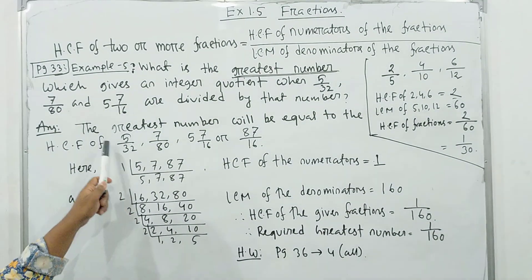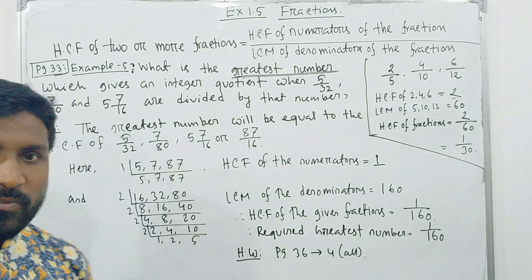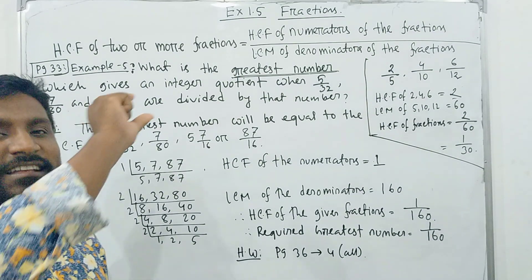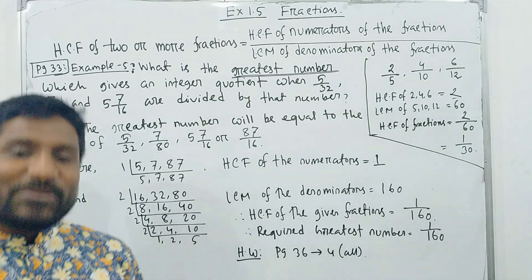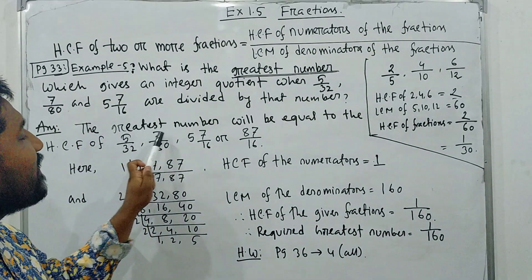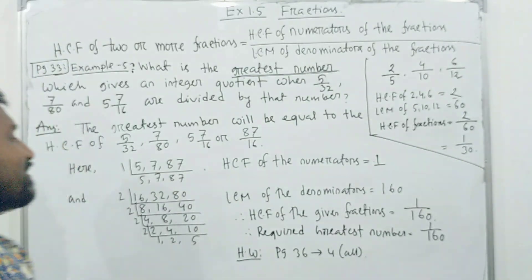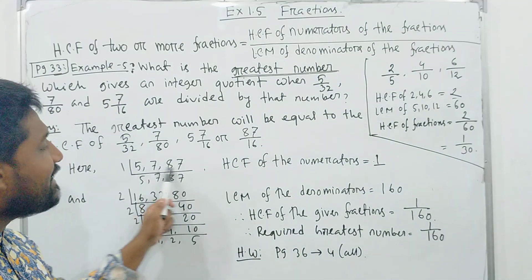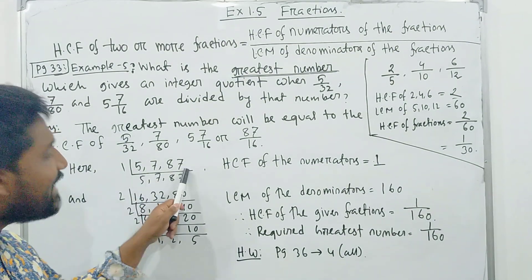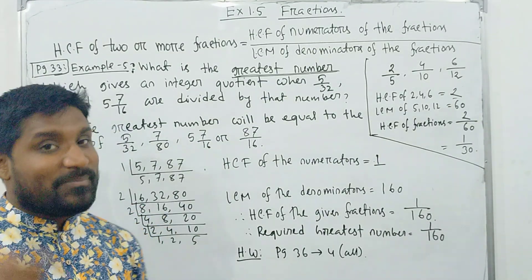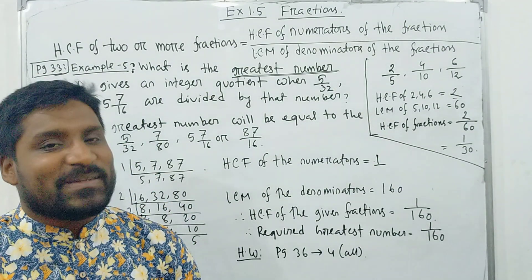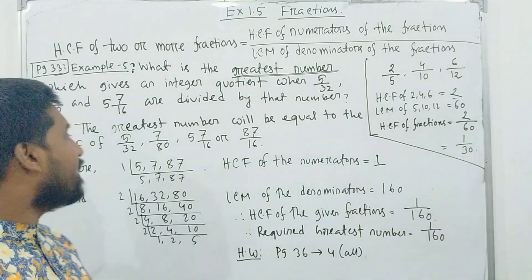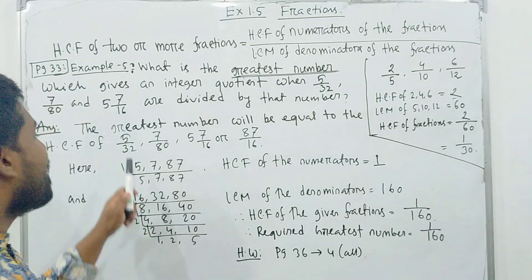So, we have given fractions: 5 by 32, 7 by 80, and 5 whole 7 by 16. Since 5 whole 7 by 16 is a mixed fraction, we convert it — we have improved and converted it to give the fraction 87 by 16. So using the formula, the numerators are 5, 7, and 87. I can find HCF of 5, 7, 87. The denominator is found using LCM of 32, 80, and 16.